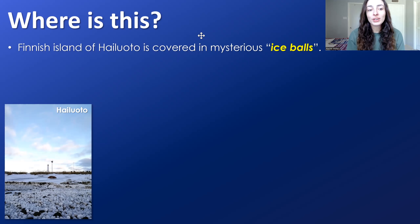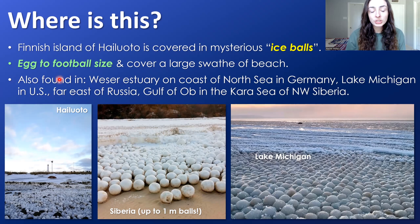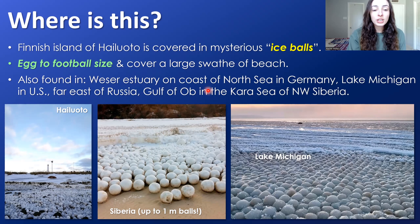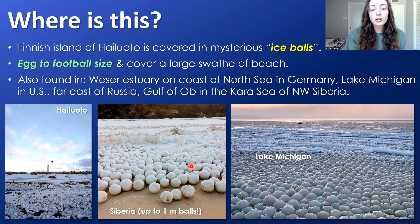Where is this happening? The picture in the thumbnail is from the Finnish island of Hailuoto. They range from egg to football size and cover a really large area of the beach. But they're also found in a few other regions of the world, such as the Weser estuary on the coast of the North Sea in Germany, Lake Michigan in the US, the far east of Russia, and the Gulf of Ob in Siberia. The Siberian ones have been seen to get up to a meter in diameter, which is insane. These are the general regions where these ice balls occur.